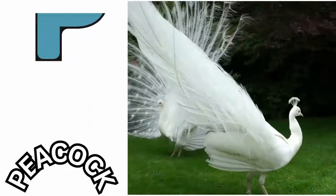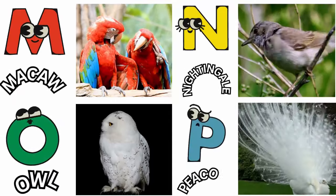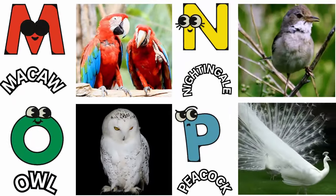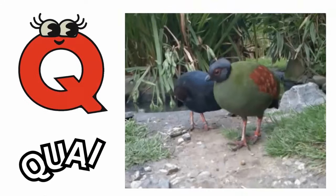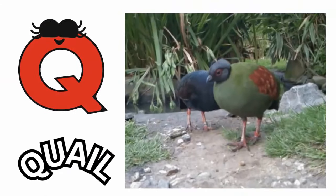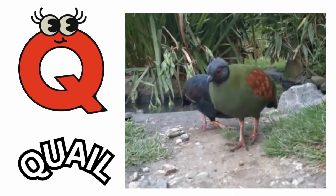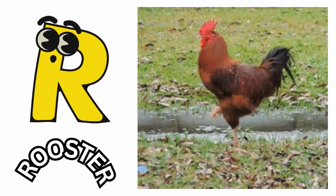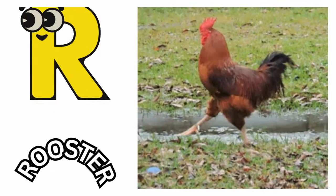P is for Peacock. Q is for Quail. R is for Rooster.